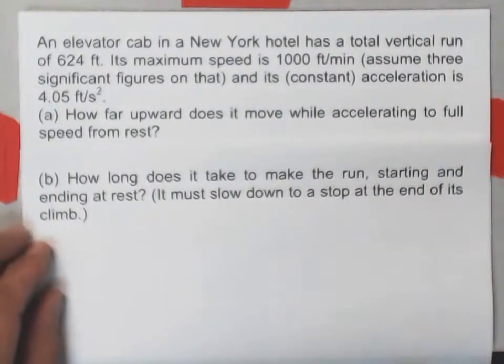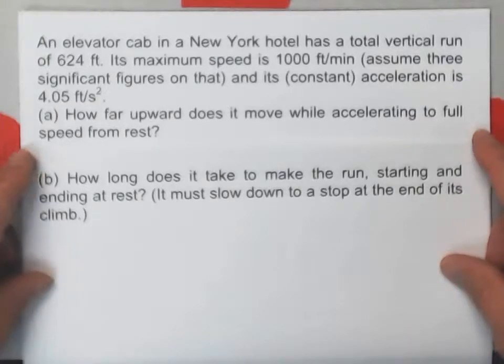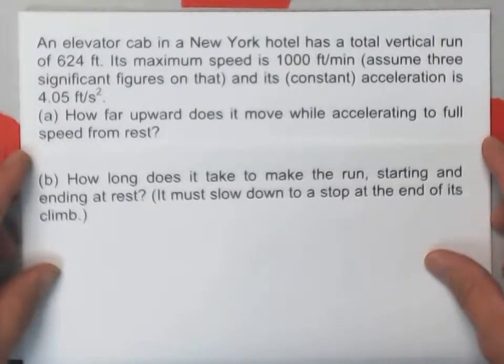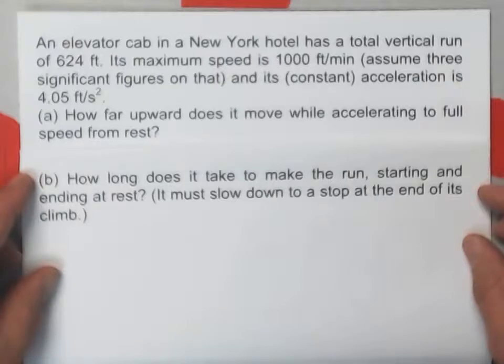We have an elevator cab in a New York hotel with a total vertical run of 624 feet. Its maximum speed is 1000 feet per minute, assume three significant figures on that, and its constant acceleration is 4.05 feet per second squared.